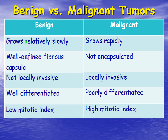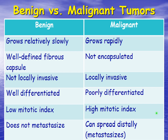Benign tumors have a low mitotic index — if we took a sample, we would see more than normal cells undergoing mitosis, but far fewer than in a malignant tumor, where we would see many, many more cells undergoing mitosis. Finally, benign tumors do not metastasize, and this is really the big distinction between benign and malignant — malignant tumors have a tendency to spread distally, or metastasize. This does not mean that every malignant tumor will metastasize, but it has the ability to do so.